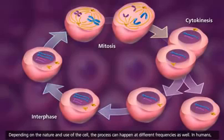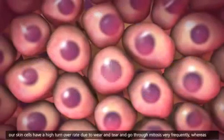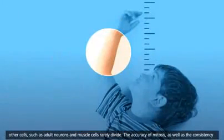Depending on the nature and use of the cell, the process can happen at different frequencies as well. In humans, our skin cells have a high turnover rate due to wear and tear and go through mitosis very frequently, whereas other cells such as adult neurons and muscle cells rarely divide.